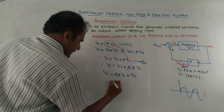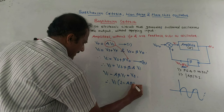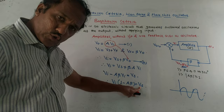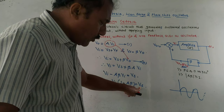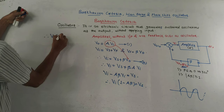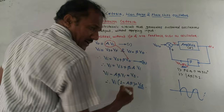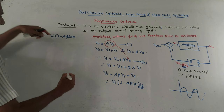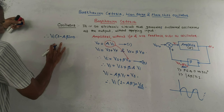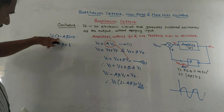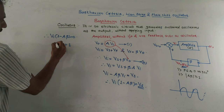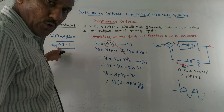Rearranging the terms, we get Vi × (1 − A·beta) = Vs. To work as an oscillator, Vs must be zero, so the equation becomes Vi × (1 − A·beta) = 0. This indicates that A × beta equals one. So this is one of the Barkhausen conditions: the product of open loop gain A and feedback factor beta must equal one.